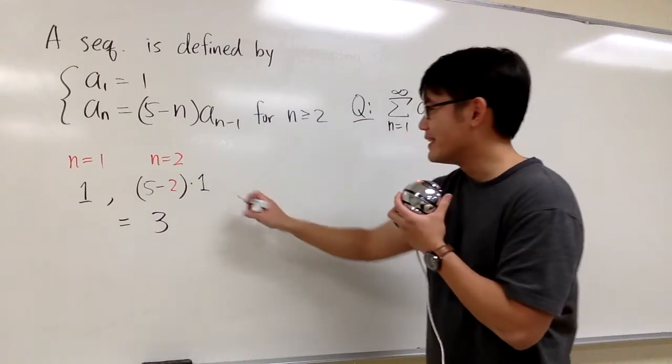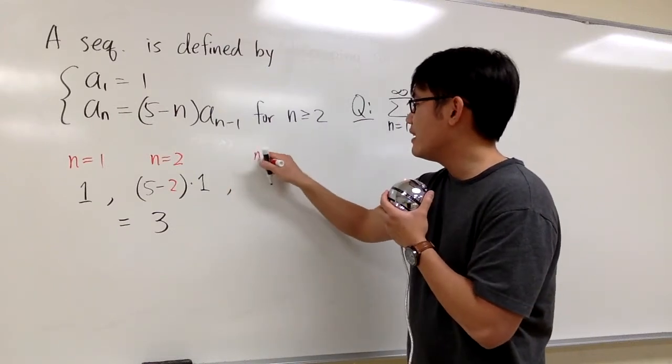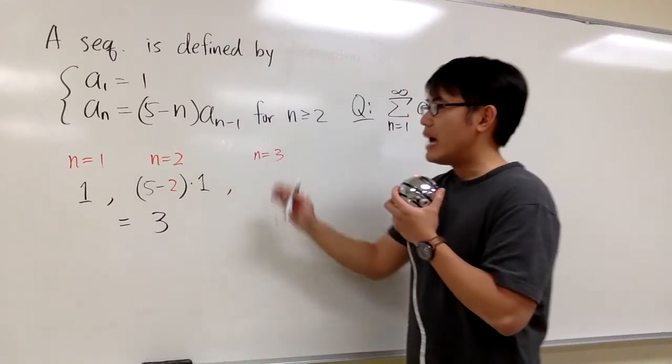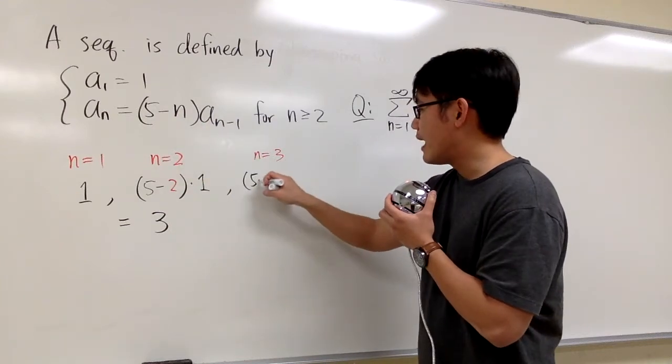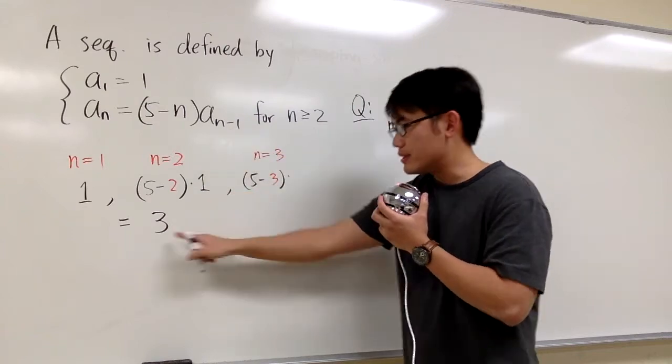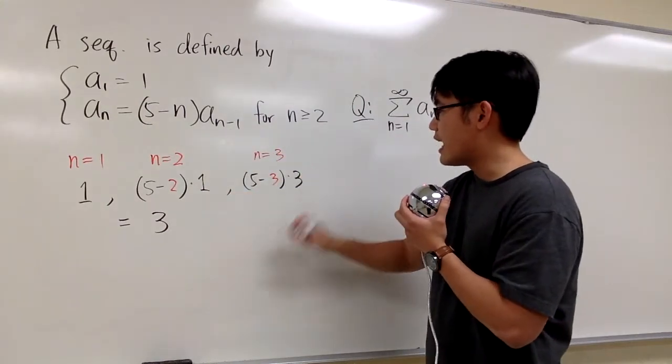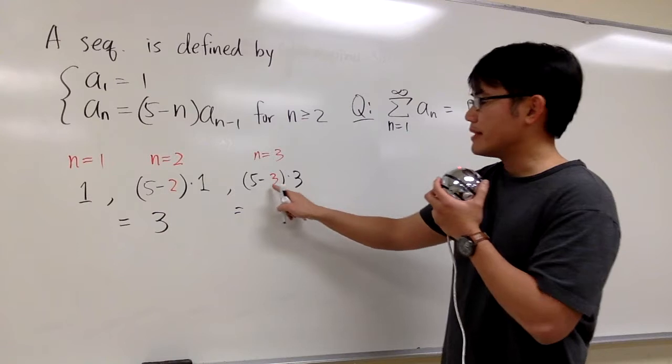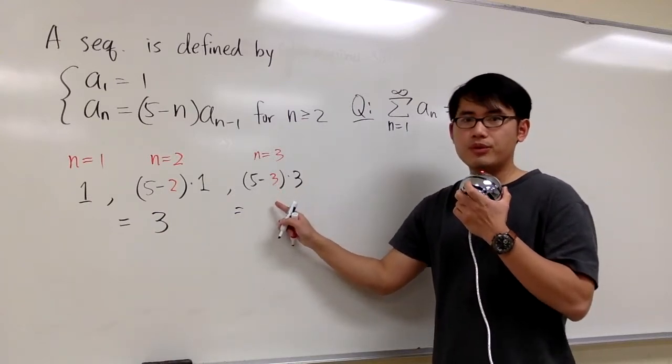And then, let's see the third term. The third term is when n equals 3. I plug in 3 into n, and then we have 5 minus 3 times the previous term, which is this 3, so let's write it down, and then work it out. 5 minus 3 is 2. 2 times 3 is 6.